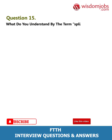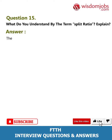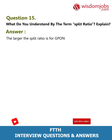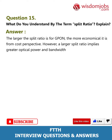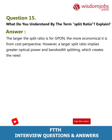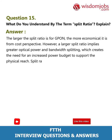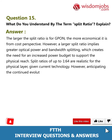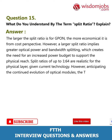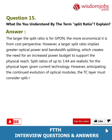Question 15: What do you understand by the term split ratio? Answer: The larger the split ratio is for GPON, the more economical it is from a cost perspective. However, a larger split ratio implies greater optical power and bandwidth splitting, which creates the need for an increased power budget to support the physical reach. Split ratios of up to 1:64 are realistic for the physical layer given current technology. However, anticipating the continued evolution of optical modules, the system must consider split ratios up to 1:128.